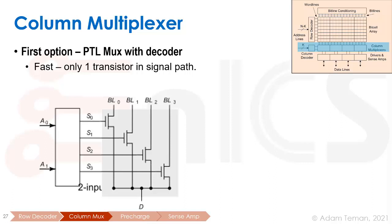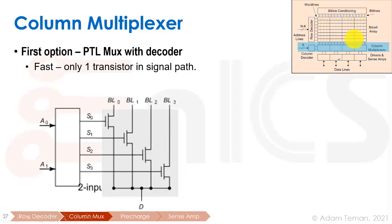Remember, we're going to be folding several of these words onto one row, and we need to usually output only one row. So let's say we have 32 bits and we only want to output eight bits — we have to have eight multiplexer instances that will choose one of the four bytes on that same row to drive back to the output.